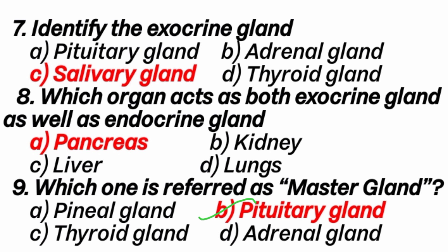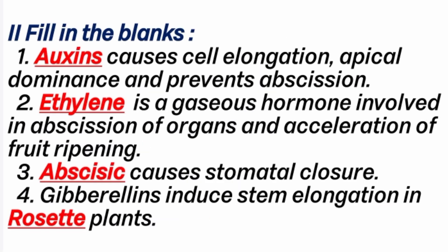Why is the pituitary gland called the master gland? Because it regulates some other endocrine glands also — thyroid gland, adrenal gland, and gonads: testes and ovaries. So that is why the pituitary gland is called the master gland. 2nd section: Fill in the blanks. 1st question: Auxin causes cell elongation, apical dominance and prevents abscission.